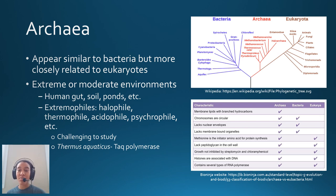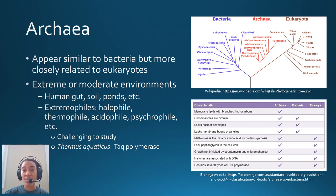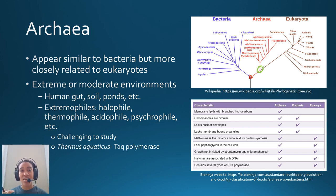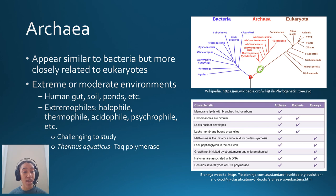Looking at the phylogenetic tree, the last common ancestor for bacteria, eukaryotes, and archaea is very far back, but the last common ancestor for archaea and eukaryotes is more recent — so they're actually closer related. Archaea can live in both extreme and moderate environments — found in soil, ponds, even the human gut. But they're really famous for their ability to live in extreme environments. When an archaea lives in a very extreme environment, we call them extremophiles.